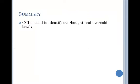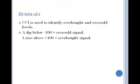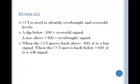To sum up, CCI is used to identify overbought and oversold levels. A dip below negative 100 would deem an oversold signal. A rise above positive 100 would deem an overbought signal.